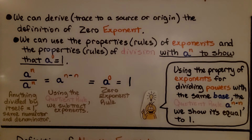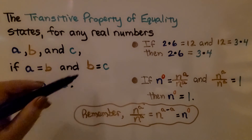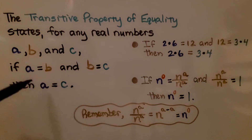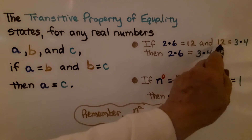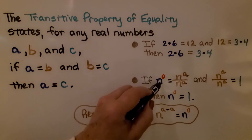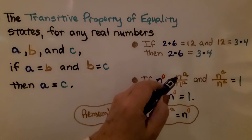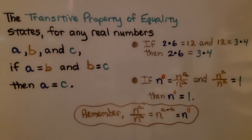Using the quotient rule, a to the n minus n, we show it equals one. The transitive property of equality states: for any real numbers a, b, and c, if a equals b and b equals c, then a equals c. Example: if 2 times 6 equals 12, and 12 equals 3 times 4, then 2 times 6 equals 3 times 4. Applying this: n to the zero power equals n to the a over n to the a, and that fraction equals 1, so n to the zero power equals 1. We subtract the a from a to get zero — that's how we got it. You'll encounter the transitive property a lot in algebra and geometry, so understanding it will really help you.